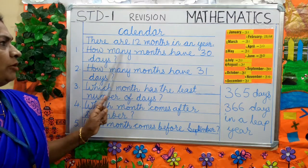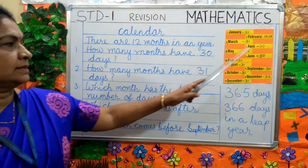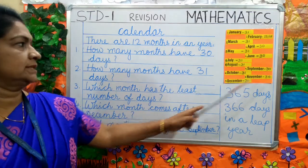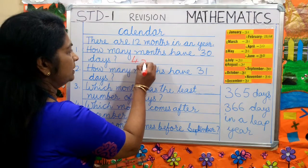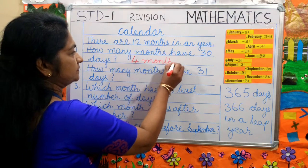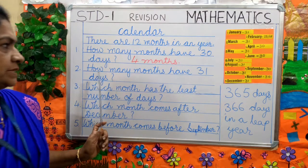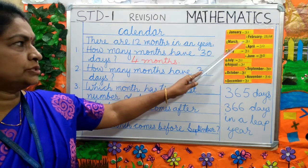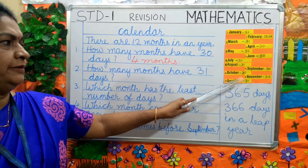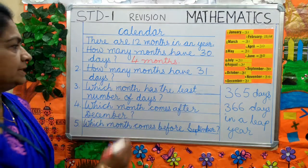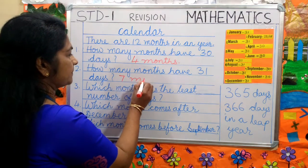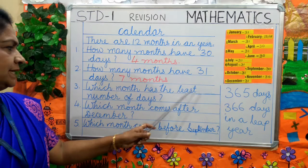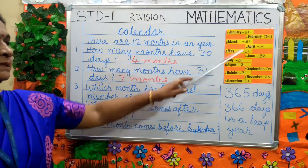Look at these questions. How many months have 30 days? April, June, September and November — so you will write 4 months. Next question: how many months have 31 days? January, March, May, July, August, October and December — 7 months have 31 days. Which month has the least number of days? February.